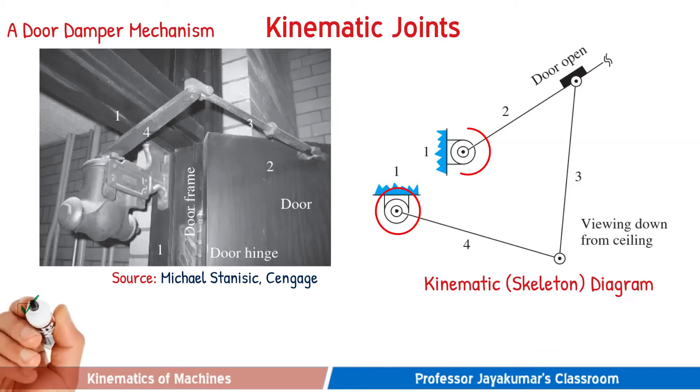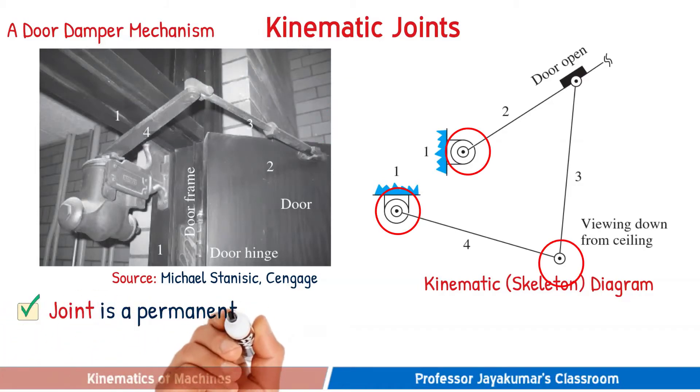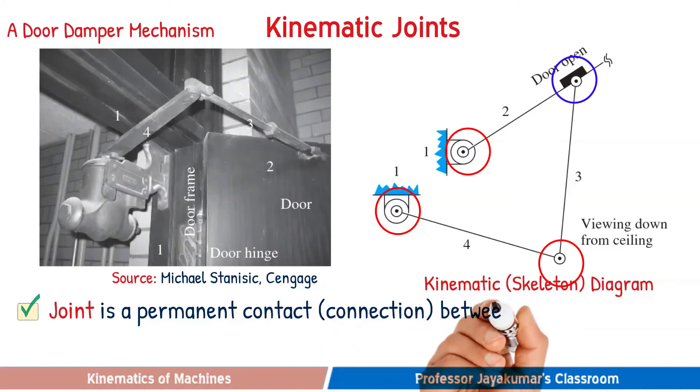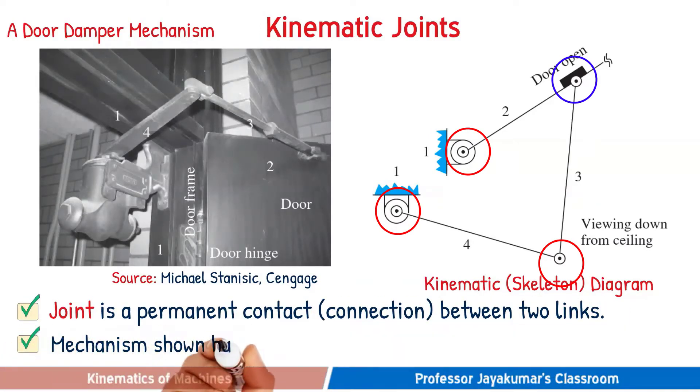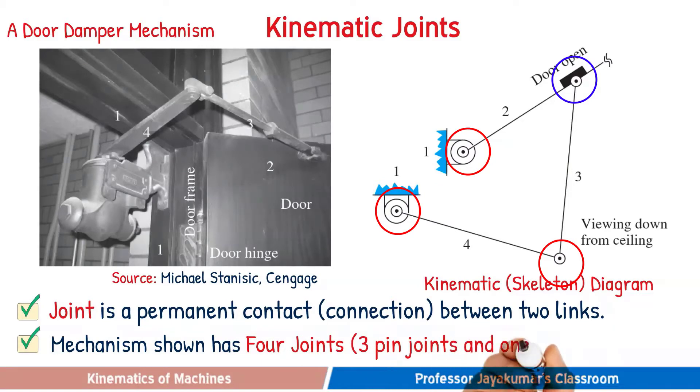As we could see, links are being joined by joints. A joint is a permanent contact between the two links. In fact, this four link mechanism has four joints: three pin joints and one sliding joint.